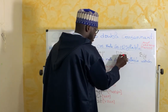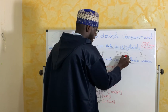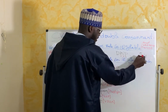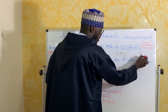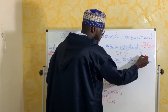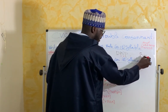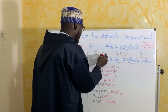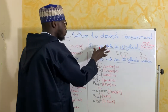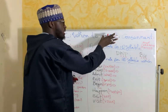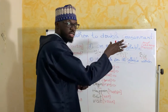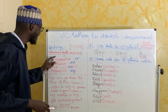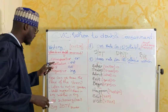'Drip': consonant, vowel, consonant. 'Big': consonant, I vowel, G consonant. So the usefulness of CVC is to be able to write these words correctly.